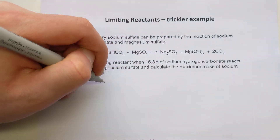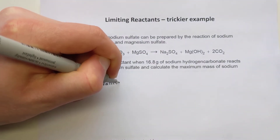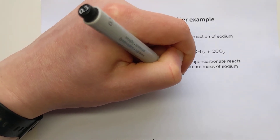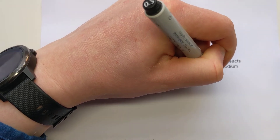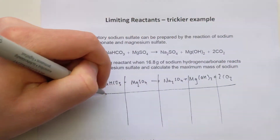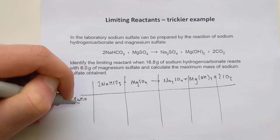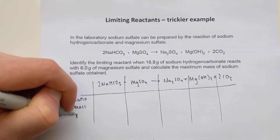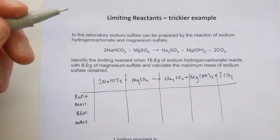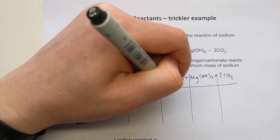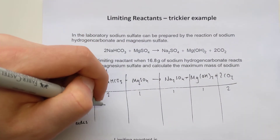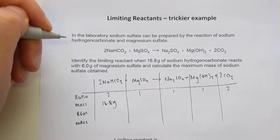Using the table method: two sodium hydrogen carbonates and one magnesium sulfate react together to make one sodium sulfate, one magnesium hydroxide, and two carbon dioxide. Filling in what I've got from the question: ratio first - it's 2 to 1 to 1 to 1 to 2 using the balancing numbers. The masses given are 16.8 grams of sodium hydrogen carbonate and 6.0 grams of magnesium sulfate.